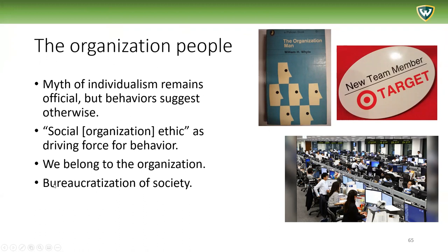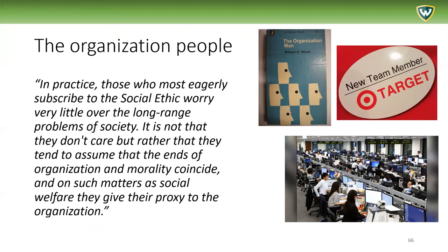He also lays out the notion of the bureaucratization of society, developing on the notions that Max Weber had identified regarding bureaucracy. Bureaucracy is not just government — it is public and private. Bureaucracy refers to the formal rules for the administration of information and people in modern organizations. A revealing quote from the first chapter: 'In practice, those who most eagerly subscribe to this social ethic worry very little over the long range problems of society. They tend to assume that the ends of organization and morality coincide, and on such matters as social welfare, they give their proxy to the organization.'